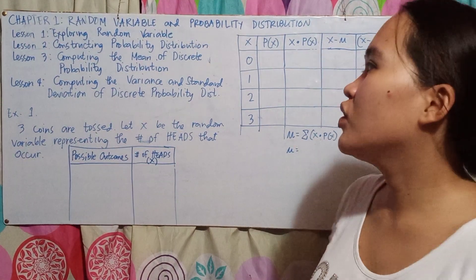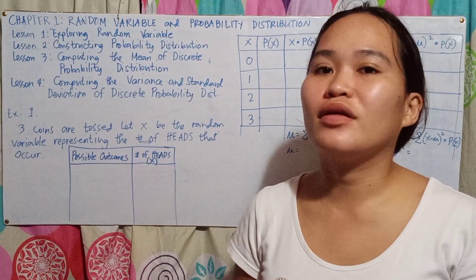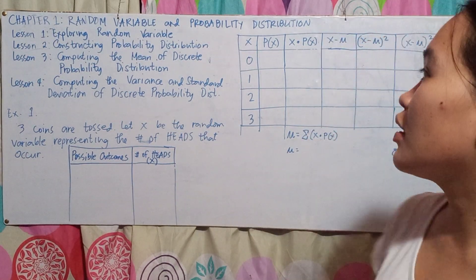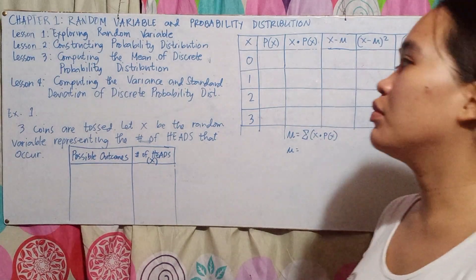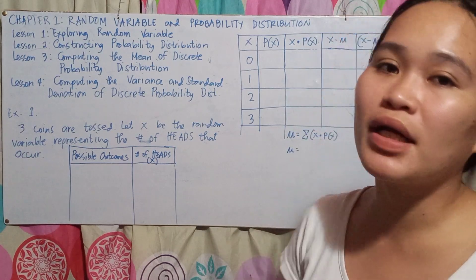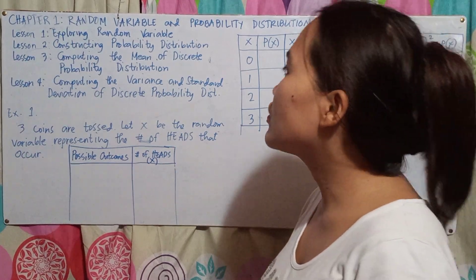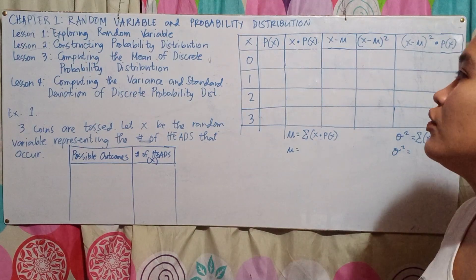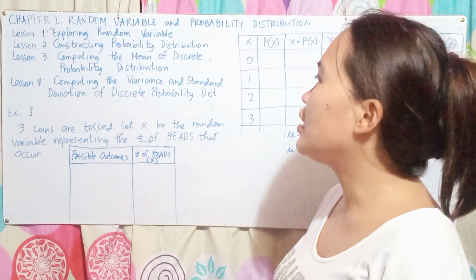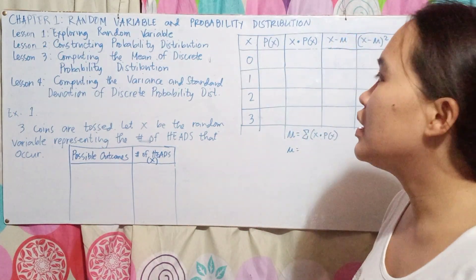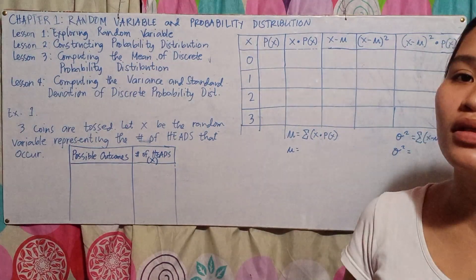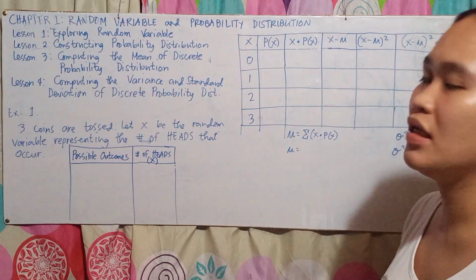Hello everyone. This is a short review of our lesson in Chapter 1, Random Variable and Probability Distribution. In Chapter 1, we have tackled four lessons: Lesson 1, exploring random variable; Lesson 2, constructing probability distribution; Lesson 3, computing the mean of discrete probability distribution; and Lesson 4, computing the variance and standard deviation of discrete probability distribution.